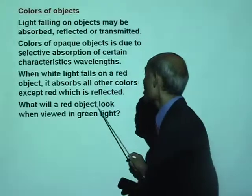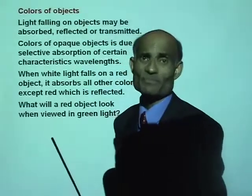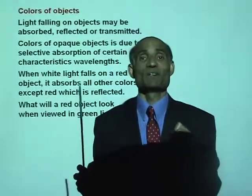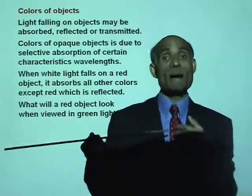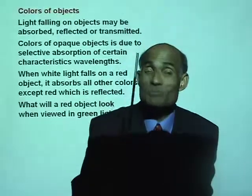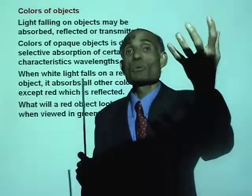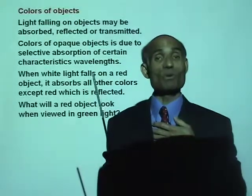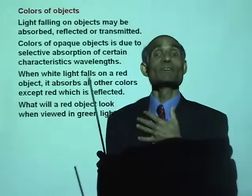What will a red object look like when viewed in green light? Suppose the projector only gave out blue light — what will my tie look like in that color? My tie will absorb all wavelengths except the wavelength that corresponds to red. If the projector gives out only blue light, my tie will absorb that blue, meaning it will not reflect anything. My tie will look dark.